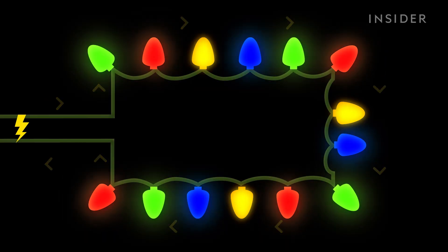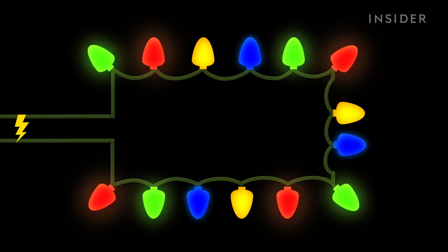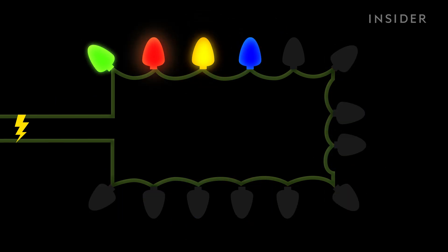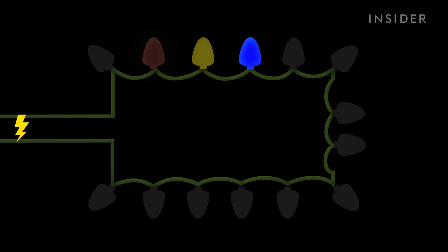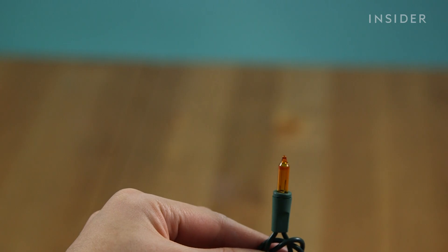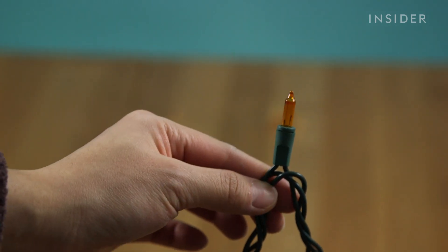In this setup, if one bulb burns out in the strand, the current won't flow through the entire circuit, which means the entire string of Christmas lights will go out. Some of these could be replaced with a working bulb, but not all.